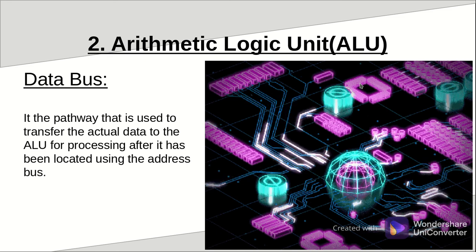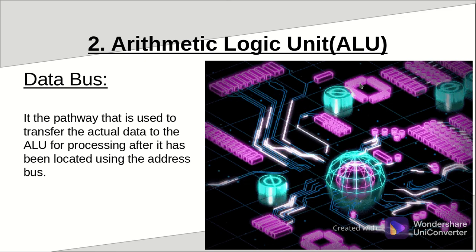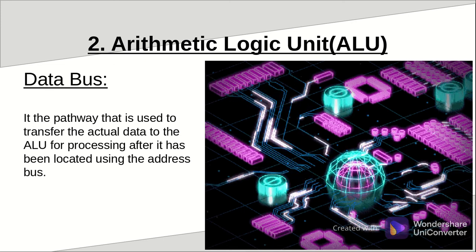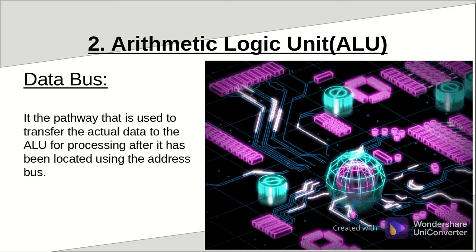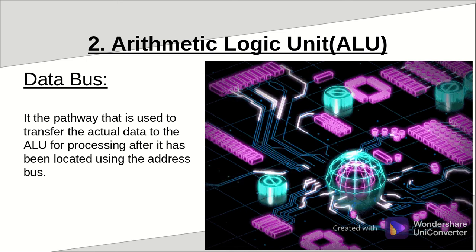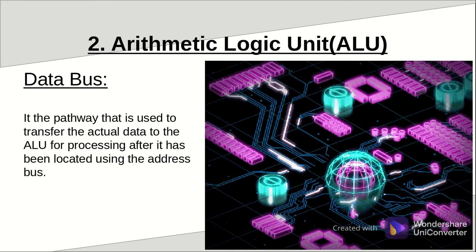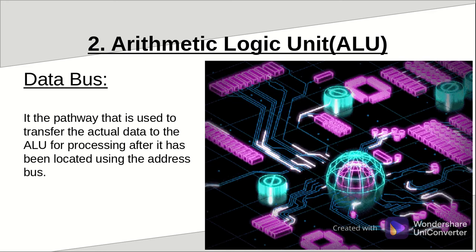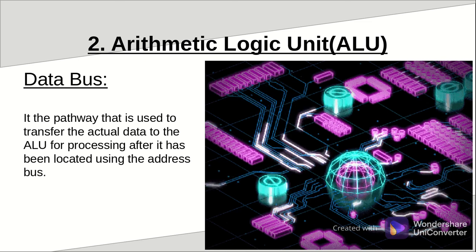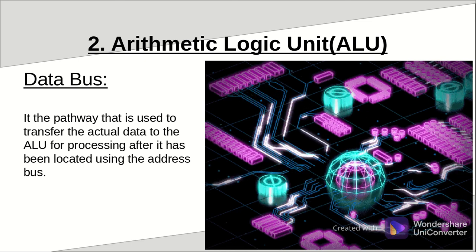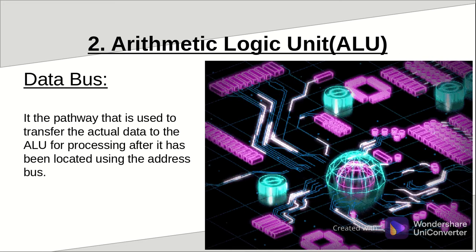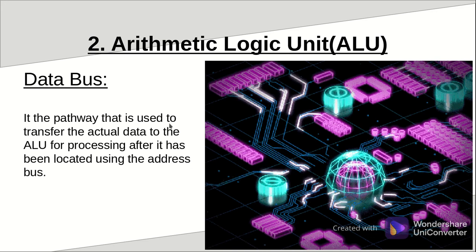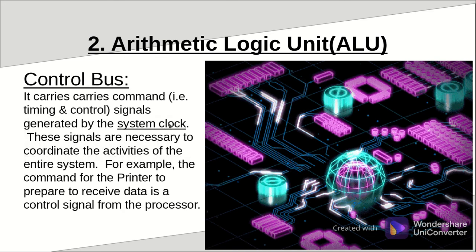The second type of bus is the data bus. The data bus is used to do the actual transfer of data from the main memory into the ALU so that it can be processed. First we locate that data using the address bus, and after it has been located, it is transferred through the data bus to where it is supposed to be processed — which is the arithmetic and logic unit.